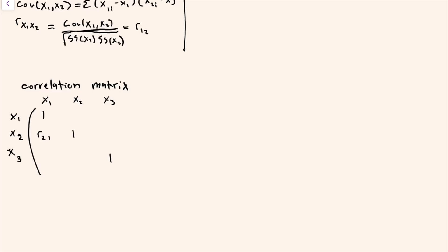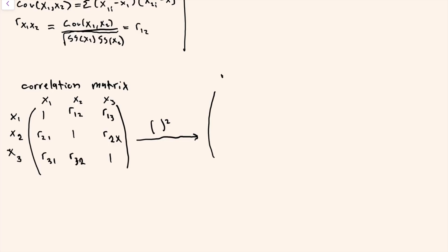The off-diagonal elements will be the correlation between the row variable and the column variable: the correlation between x2 and x1, x3 and x1, x3 and x2, x1 and x2, x1 and x3, and x2 and x3. If you take all of those elements and square them, you end up with a similar matrix.